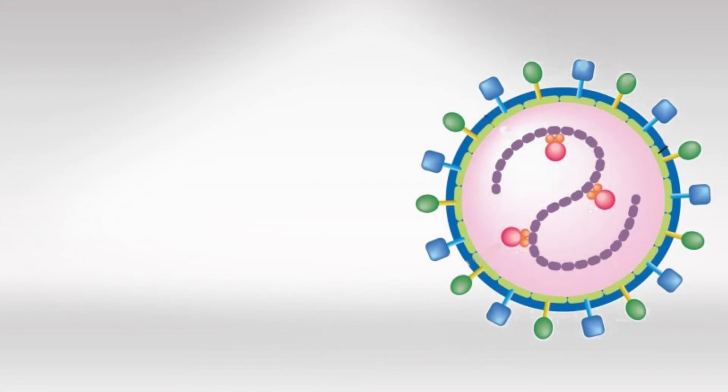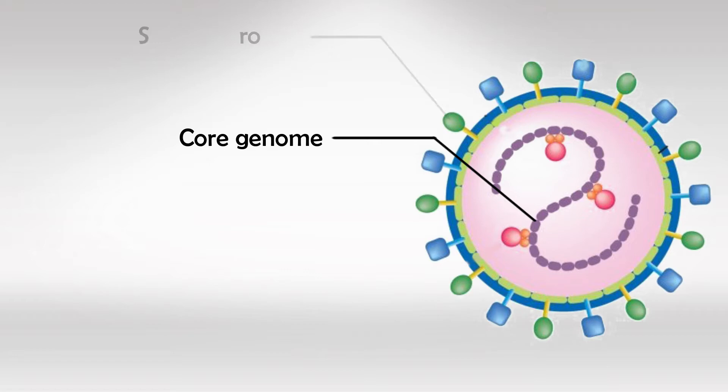The virus has two main parts: the core genes and the surface proteins. These two components give us five different serology markers.